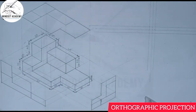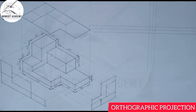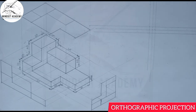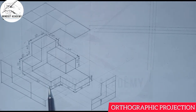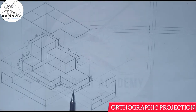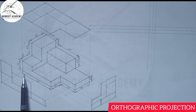Front elevation means we are looking in this direction, focusing on the length and the height. What is the total length? From here to here is 60, and from here to here is 30, making the total length 90. These two measurements are parallel, so we call them the entire length — you cannot focus on the 20.